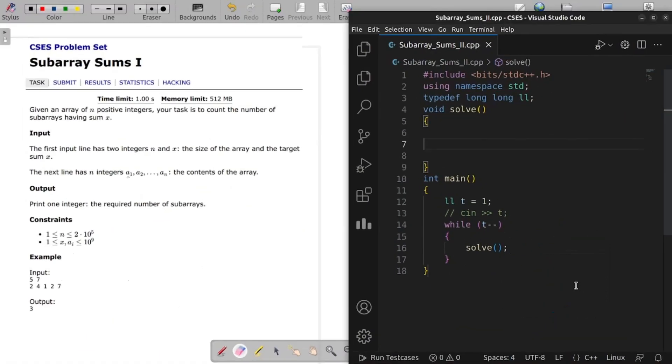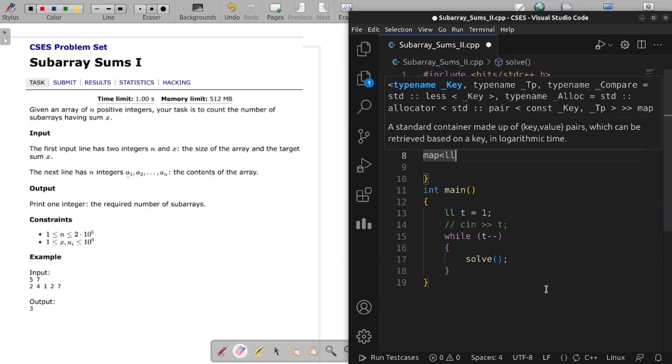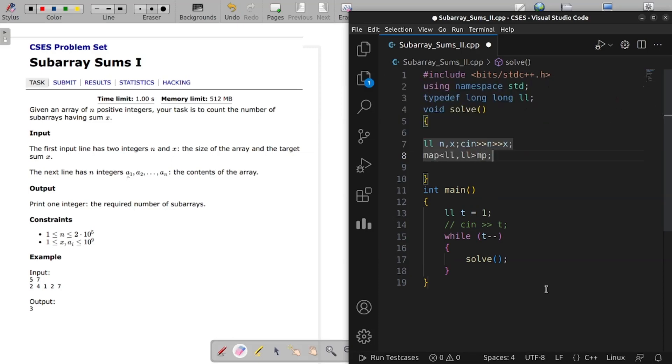Okay. First we have given n elements, then x target sum. Now we will take a map, then we will take current sum and count.